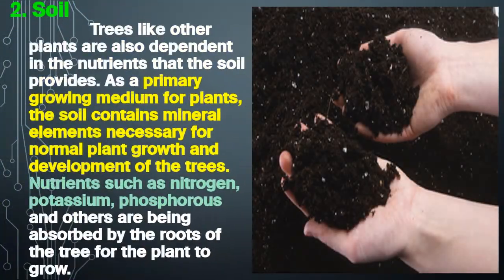2. Soil. Trees, like other plants, are dependent on the nutrients that the soil provides. As a primary growing medium for plants, the soil contains mineral elements necessary for normal plant growth and development of the trees.